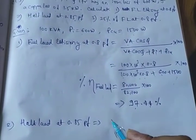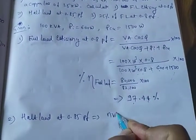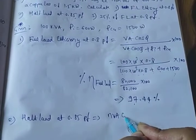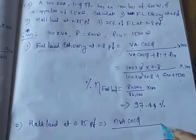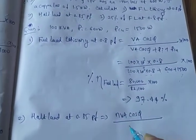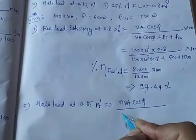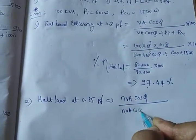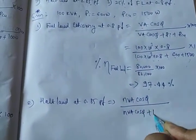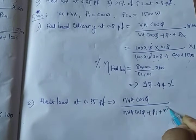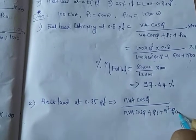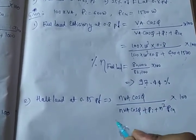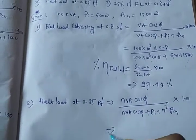The second part is half load at 0.85 power factor. Half load means other than full load, so we consider it as a fractional load. The formula is: n × VA × cos φ divided by (n × VA × cos φ + Pi + n² × Pcu) × 100. This is the formula for other than full load condition.